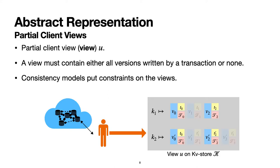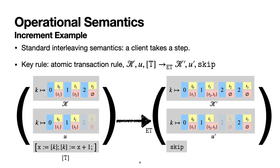The client of a distributed key-value store may not observe the entire global state. For example, a client may only observe state from one replica. We model this through a notion of client view, which contains only partial information over the global key-value store.